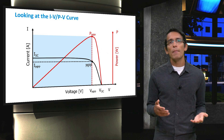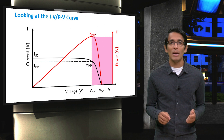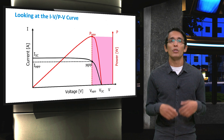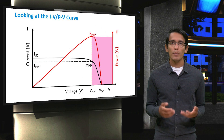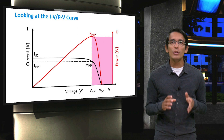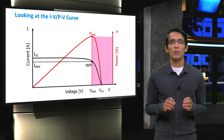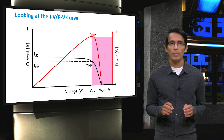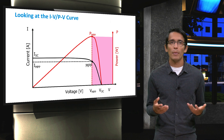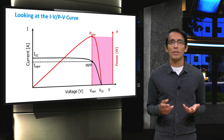Finally, there is the region to the right of the maximum power point, which is shown in pink. If we are in this region, we know that we have to reduce the voltage in order to reach the maximum power point. So those are the three regions of interest.